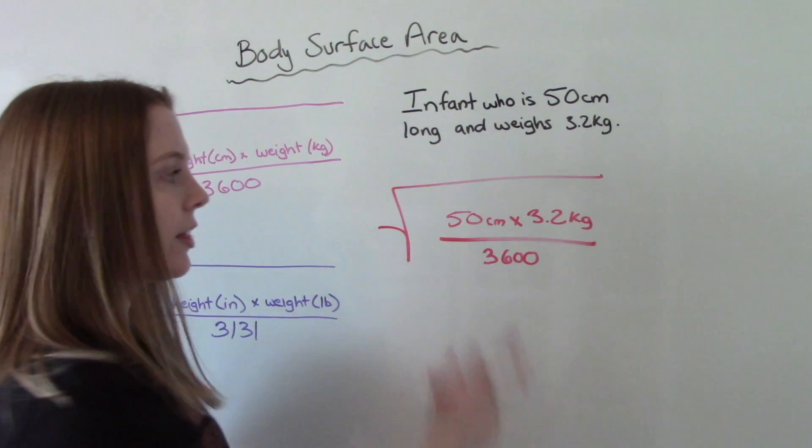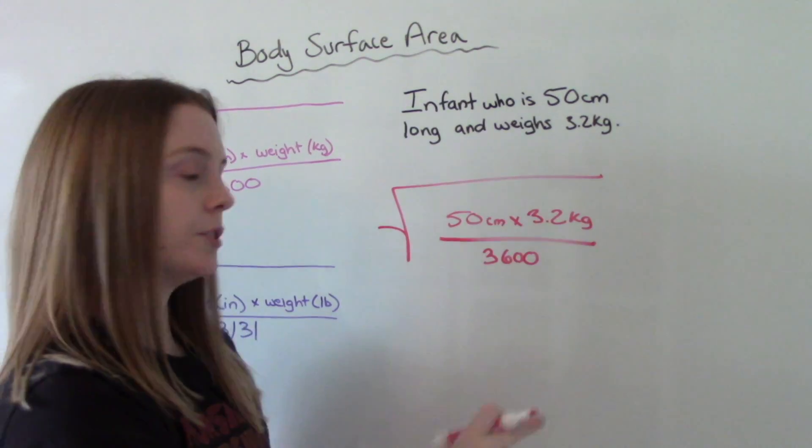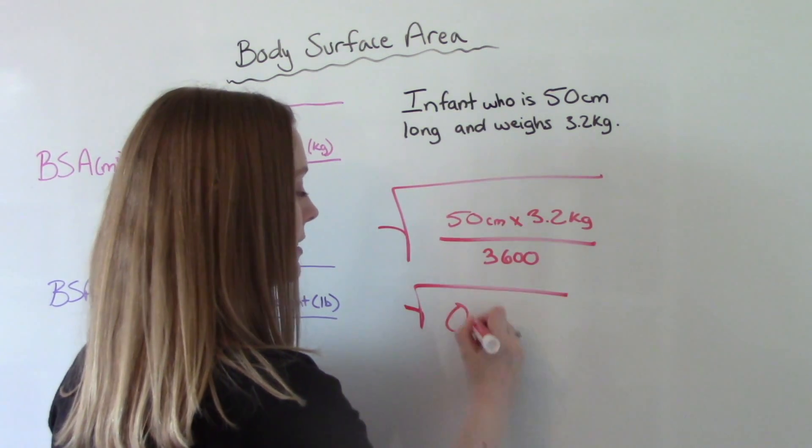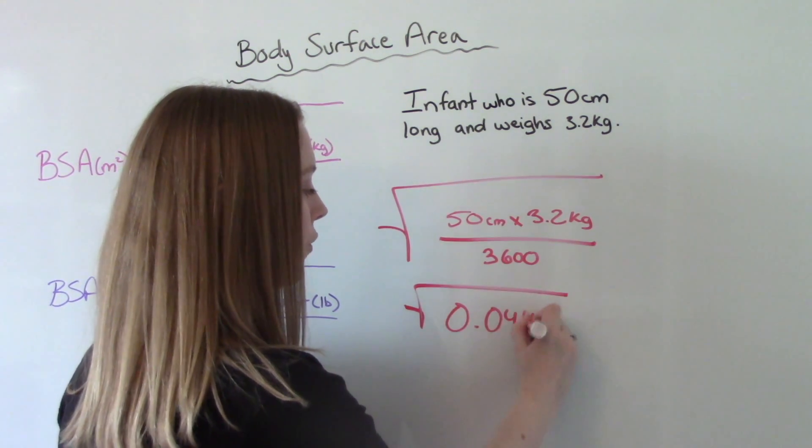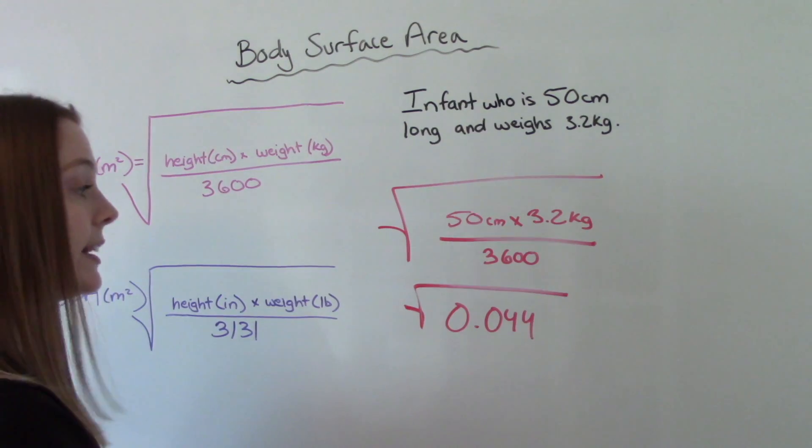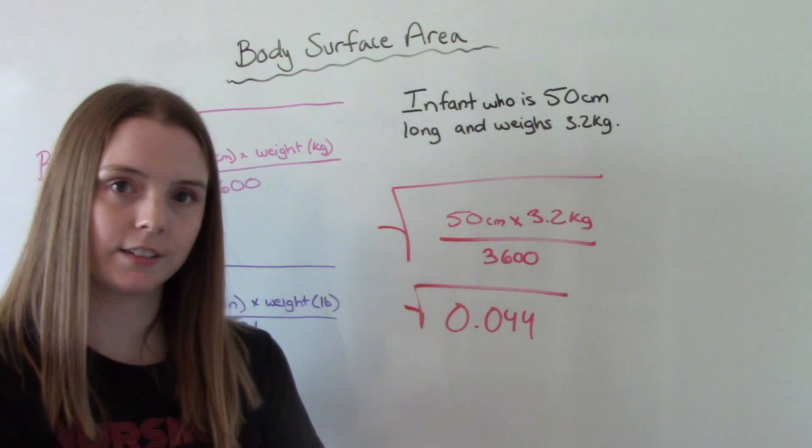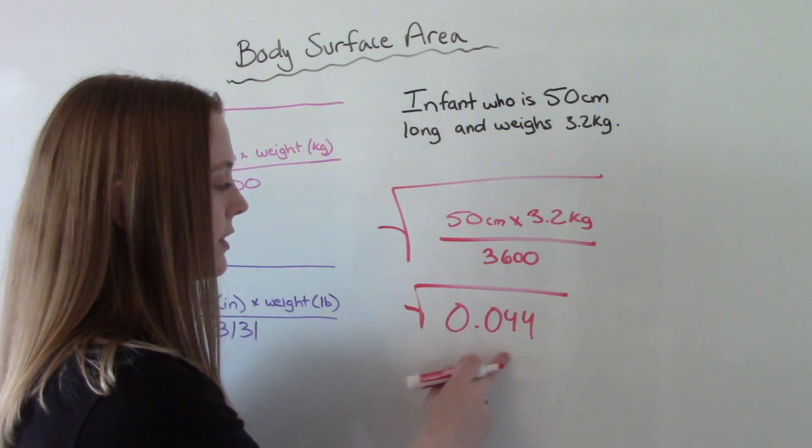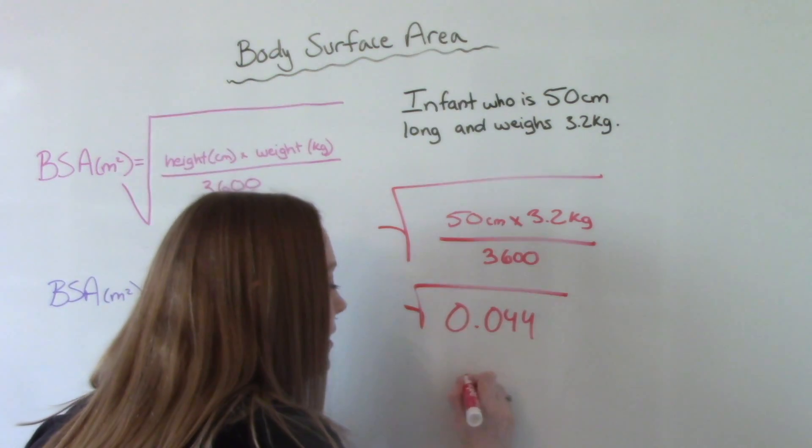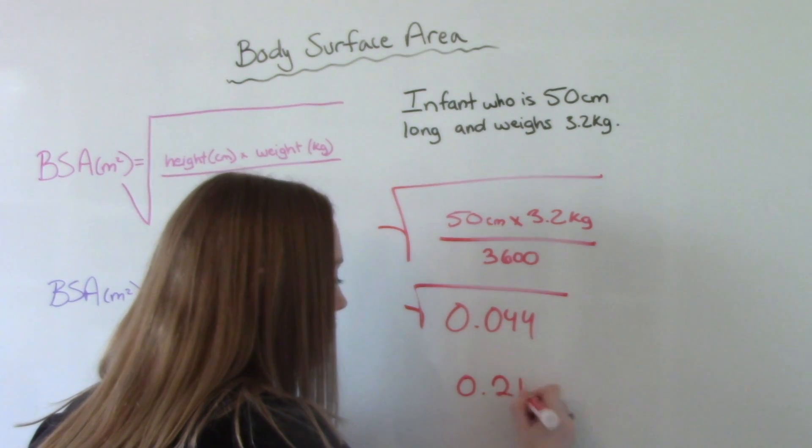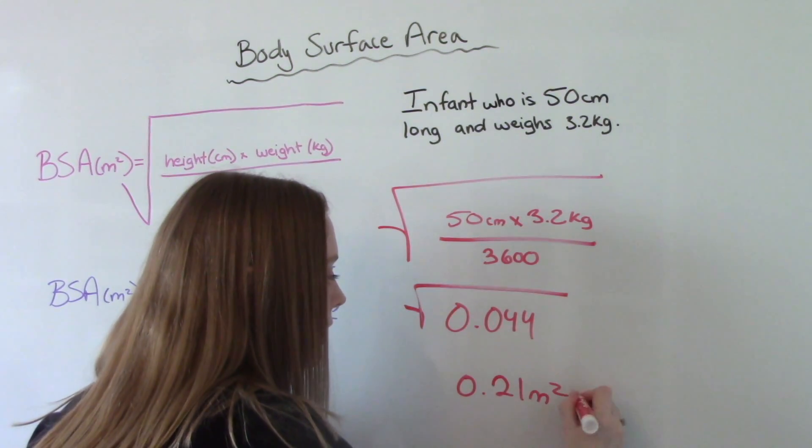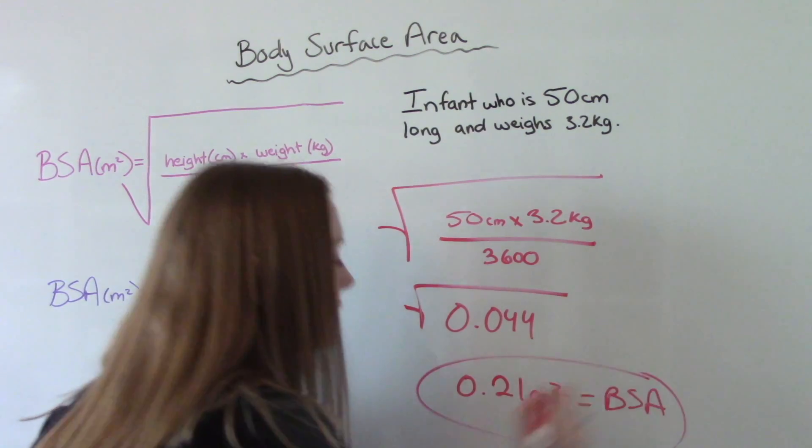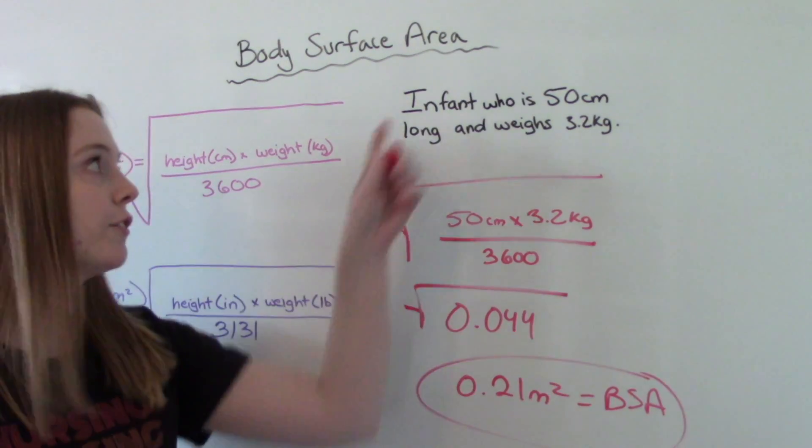So when we do the math, 50 times 3.2 divided by 3,600, we get 0.044. So we need to find the square root of this. So simply punch in your calculator the square root of 0.044. And then we get 0.21 m squared. So this is our answer. This is our body surface area for this infant.